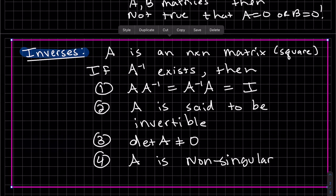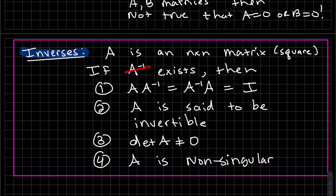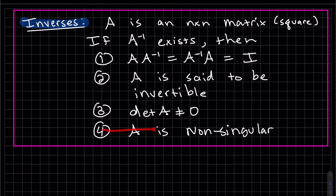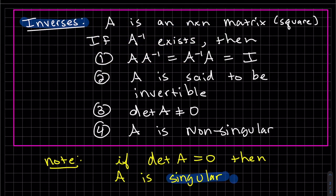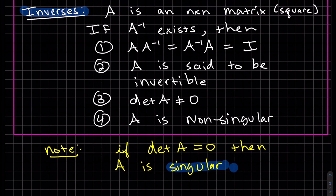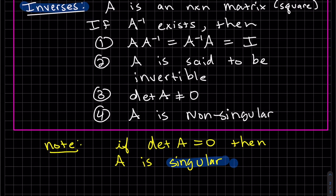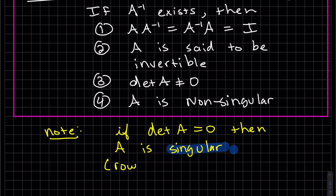So basically, if A inverse exists, then when you multiply them, A times A inverse, you get the identity matrix. It has to be both ways. A is considered to be called invertible. The determinant of A doesn't equal zero. We'll do more on the determinants later. And A is also considered non-singular. If the determinant of A is equal to zero, then it's considered singular, and what this means is we'll probably have a row of zeros if you row reduce and an infinite number of solutions.